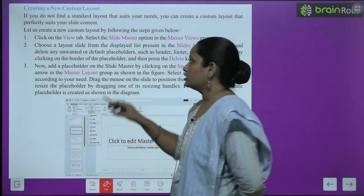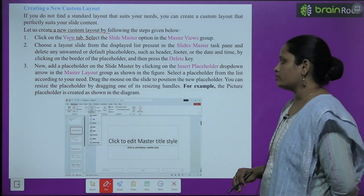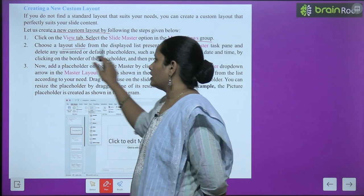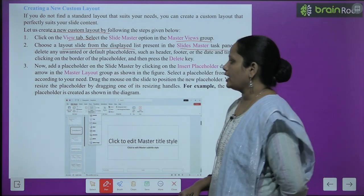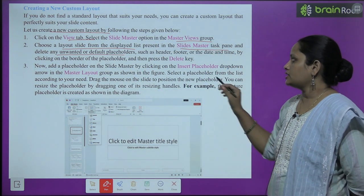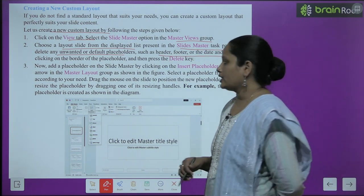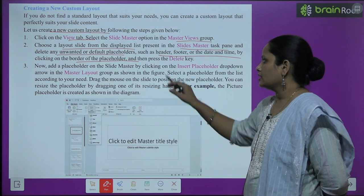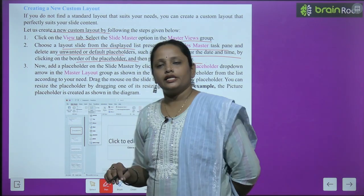Pehle hamein jaana hai View tab mein, wahan se select karenge Slide Master — jo ki Master View group mein easily mil jaayega. Ab layout choose karna hai Slide Master task pane mein se, aur delete karna hai koi bhi unwanted ya default placeholder jo hamen nahi chahiye — jaise header, footer, ya date and time. By clicking on the border of the placeholder aur phir pressing the delete key — border pe click karne ke baad delete key press karni hai.